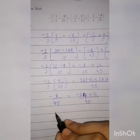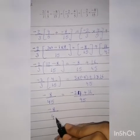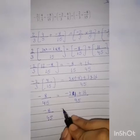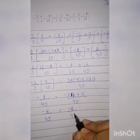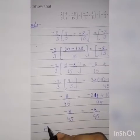From 24 we'll subtract 16, so we get minus 8 over 45. Hence proved.